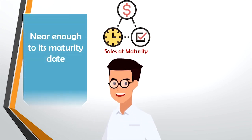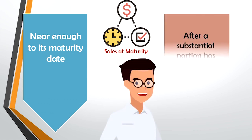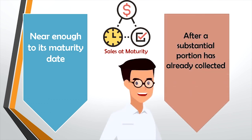Sale at maturity: the sale of a security occurs near enough to its maturity date that interest rate risk is substantially eliminated as a pricing factor. The sale of a security occurs after the enterprise has already collected a substantial portion, or at least 85%, of the principal outstanding at acquisition, due either to prepayments on the debt security or to scheduled payments on a debt security payable in equal installments over its term.